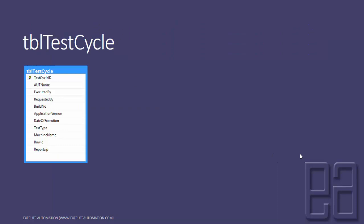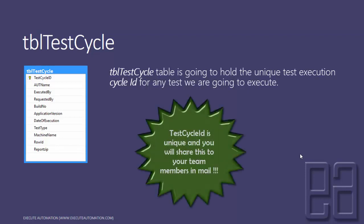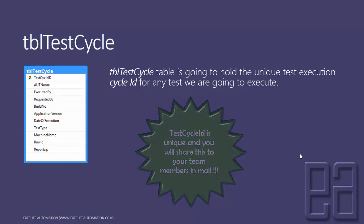TBL Test Cycle table is going to hold the unique test execution cycle ID for each test we are going to execute — it is very, very important. This ID is going to be a unique ID for your whole test execution, and you will use this cycle ID for identifying what test is being executed at any given point of time.